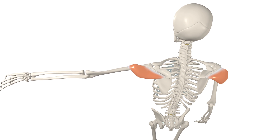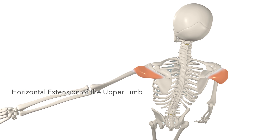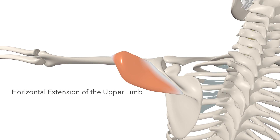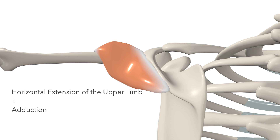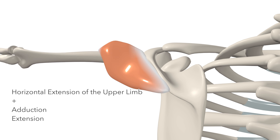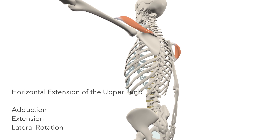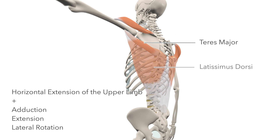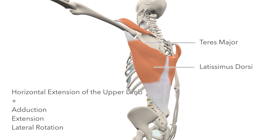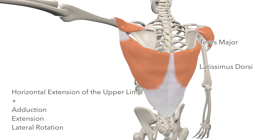The posterior head of the deltoid draws the upper limb backwards, contributing to horizontal extension of the arm, as you can see here, as well as abduction, extension, and lateral rotation of the upper limb. The teres major and latissimus dorsi muscles assist the posterior head in performing all of these actions.